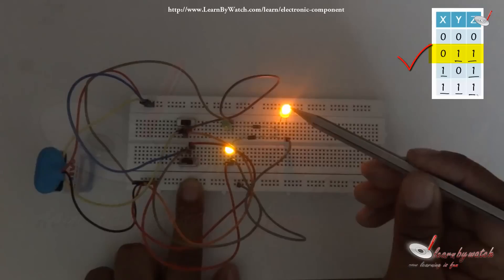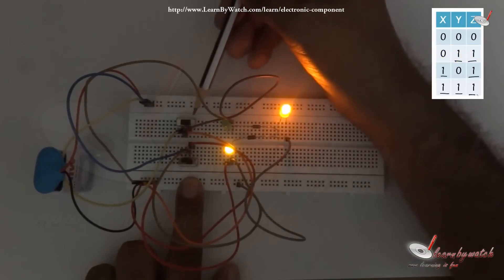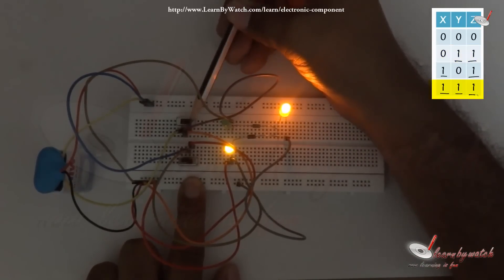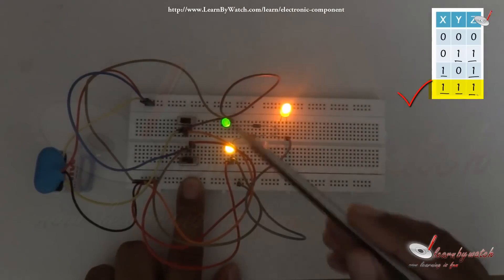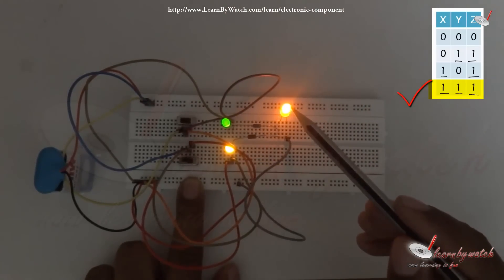Both of the LEDs are glowing. Now, let us switch another input on. You can see both the inputs are on. Then, output LED is on.